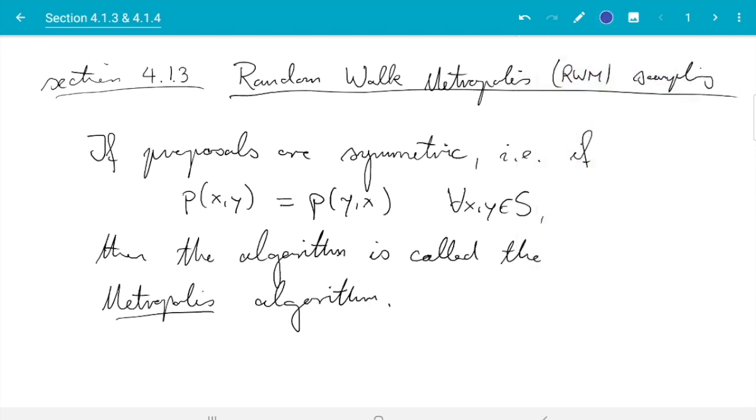And that plays a special role because in this case the form of alpha simplifies a bit. So generally we have alpha xy for the continuous case is minimum of density pi at y p y x divided by pi of x p x y. And the minimum is 1 to make it a probability.